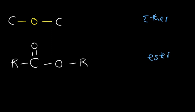For ethers, the functional group is that oxygen with two single bonds. For esters, it's a carbonyl group connected to a single oxygen. As a research task, look up whether there are any special names for these functional groups.